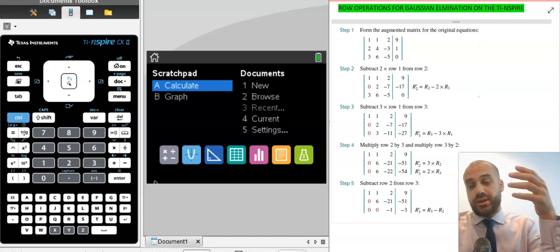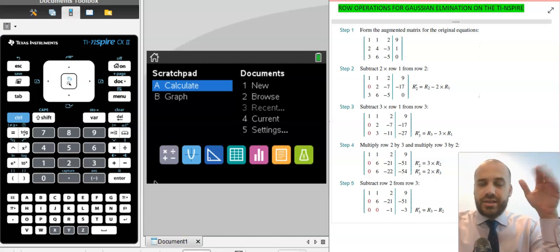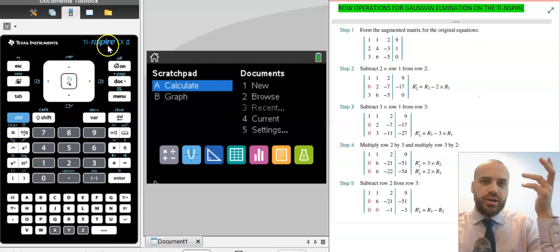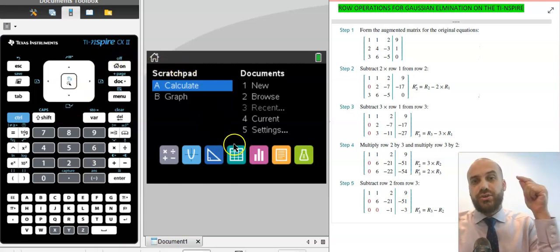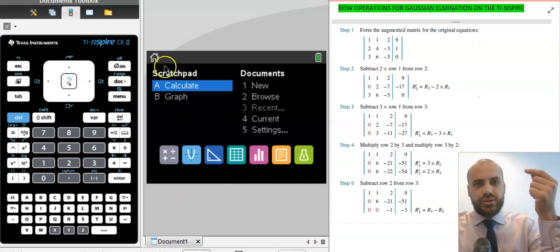When you're doing Gaussian elimination by hand or using another calculator, those row operations, it's really easy to stuff something up. And once you stuff something up, it's over. It's really easy if you've got your TI-Nspire, because you can do the row operations on there instead. And that's what we're going to do.